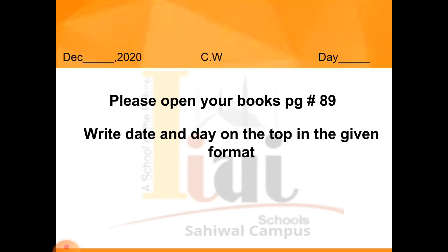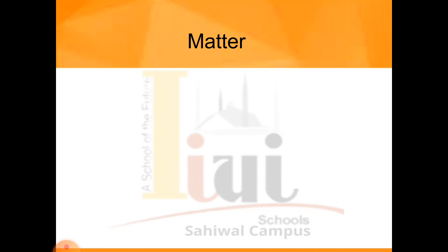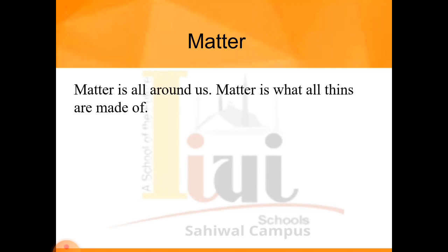First, we will discuss matter. What is matter? Matter is all around us — matter is what all things are made of. All things are made of matter. If we look at the definition of matter simply: matter is the thing that takes up space, occupies space, and has volume. For example, a chair takes up space and has its own volume, so a chair is matter. Your book is also matter — it has some volume and it also takes up space.